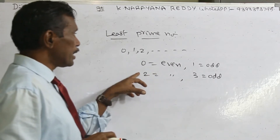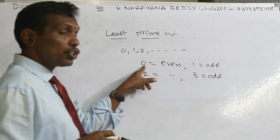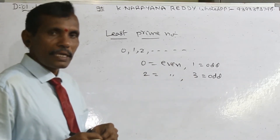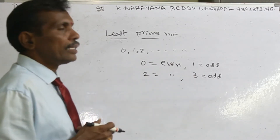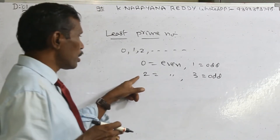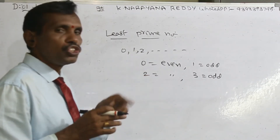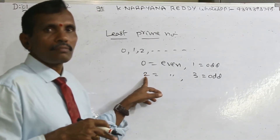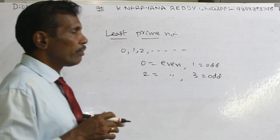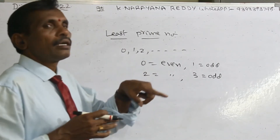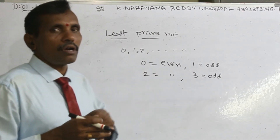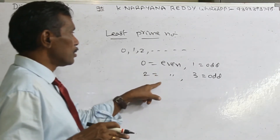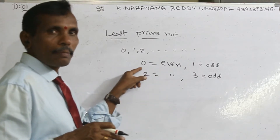When recalling: 0 is even, 1 is odd, 2 is even, 3 is odd. When you divide any number by 2 and the remainder is 0, those are called even numbers. Whenever you divide and get remainder 1, those numbers are called odd numbers. The least prime number is 2.